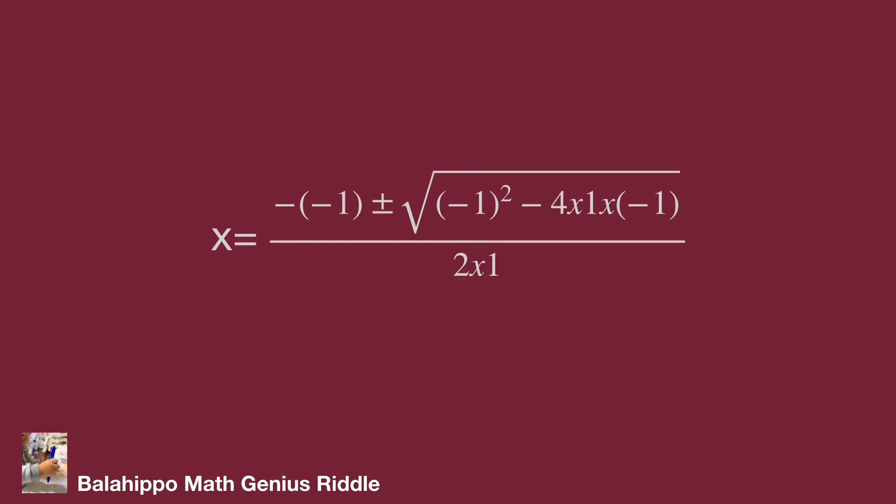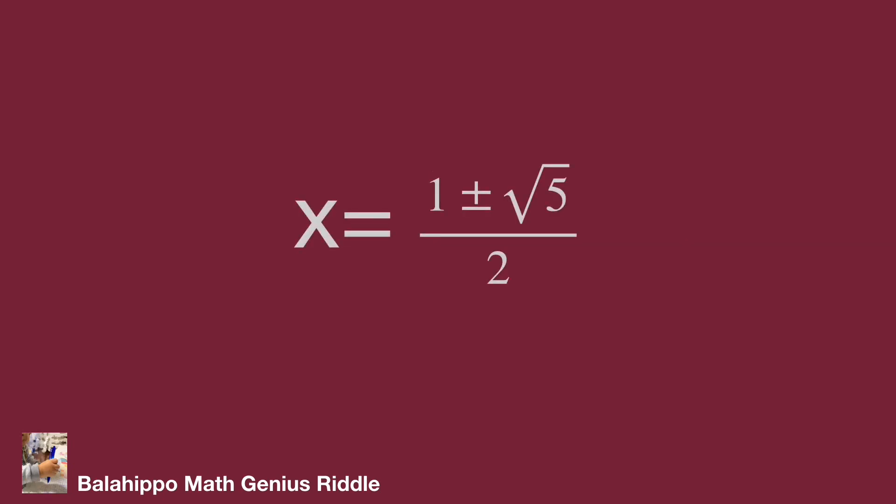Apply the formula and simplify it. Get x equals 1 plus or minus square root of 5 over 2.